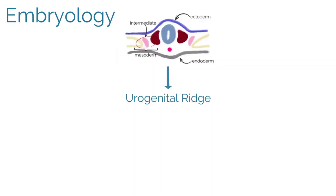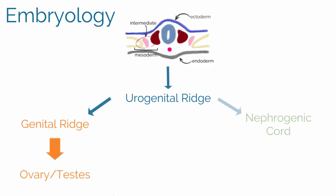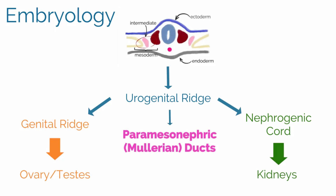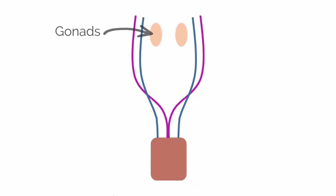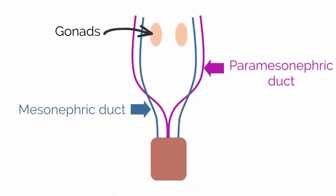The intermediate mesoderm gives rise to the urogenital ridge. The urogenital ridge is further divided into the genital ridge, which ultimately gives rise to the ovary or testes; the nephrogenic cord, which gives rise to the kidneys; and the paramesonephric or Müllerian ducts, and the mesonephric or Wolffian ducts. Labeled in this image are the gonads, the paramesonephric ducts, and the mesonephric ducts.